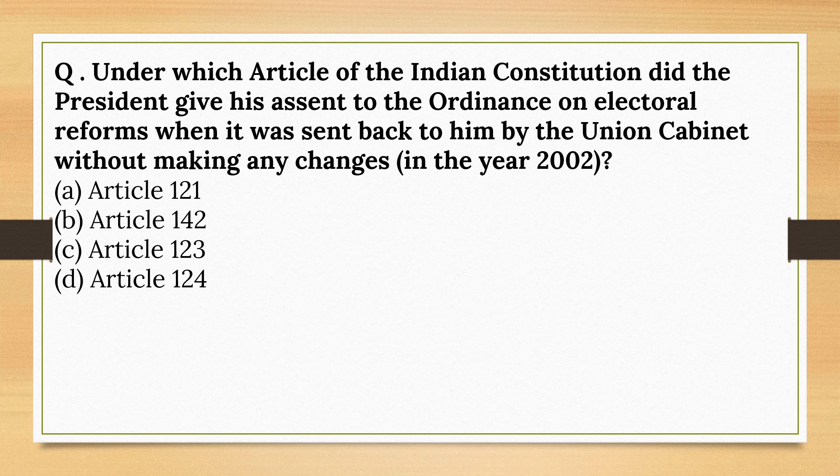Under which Article did the President give his assent to the Ordinance and Electoral Reforms when it was sent back to him by the Union Cabinet without any changes? Article 123.